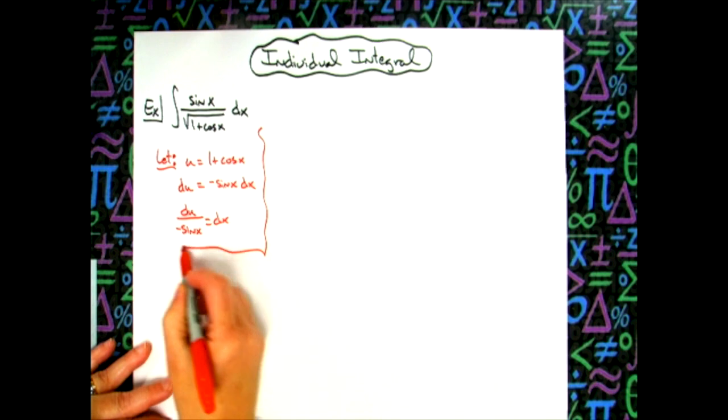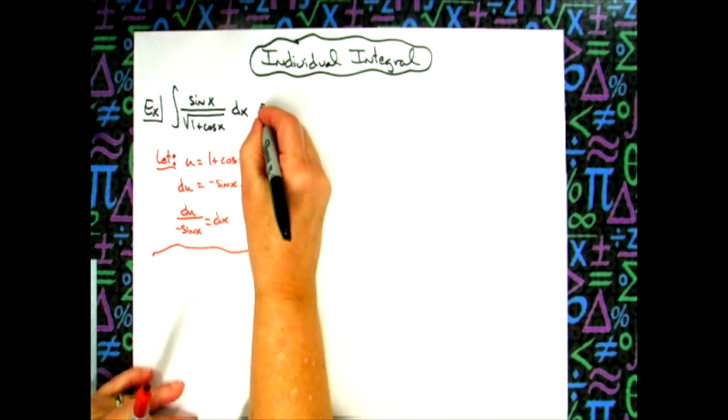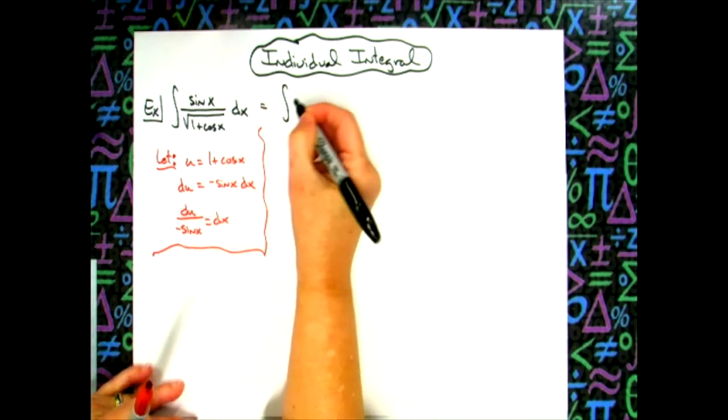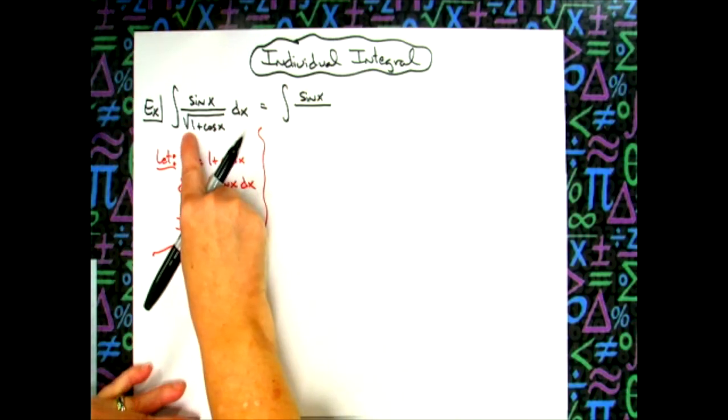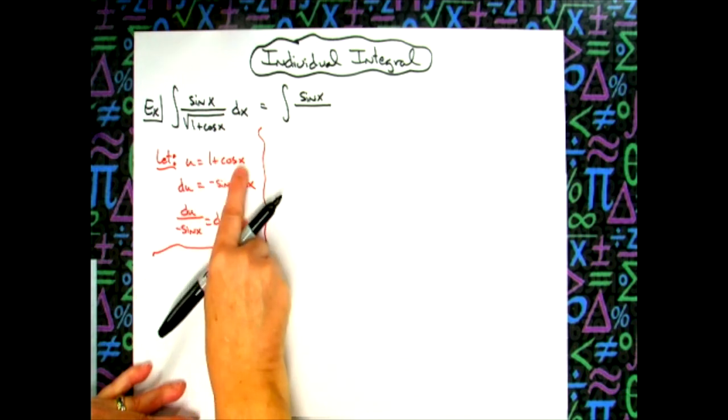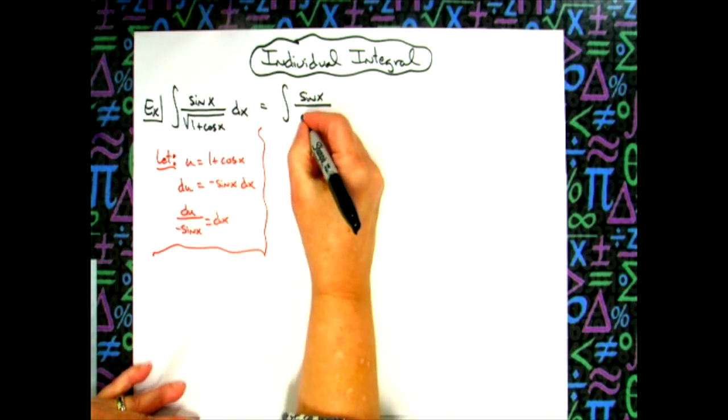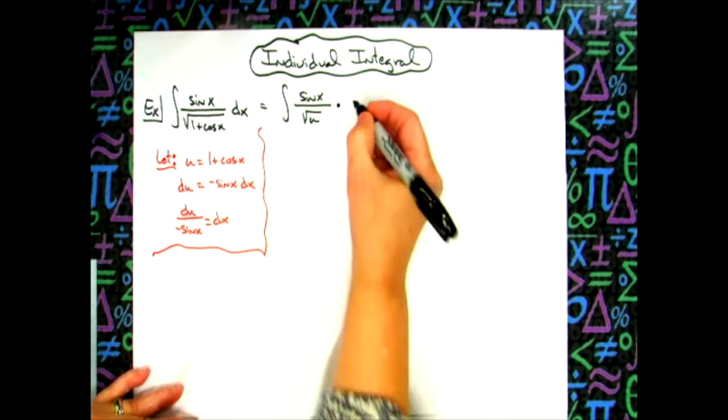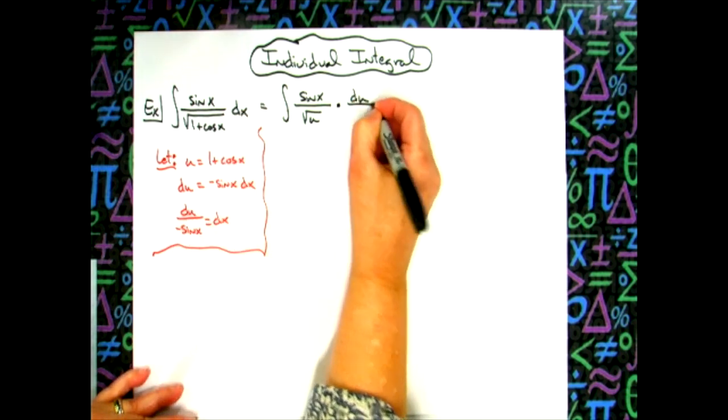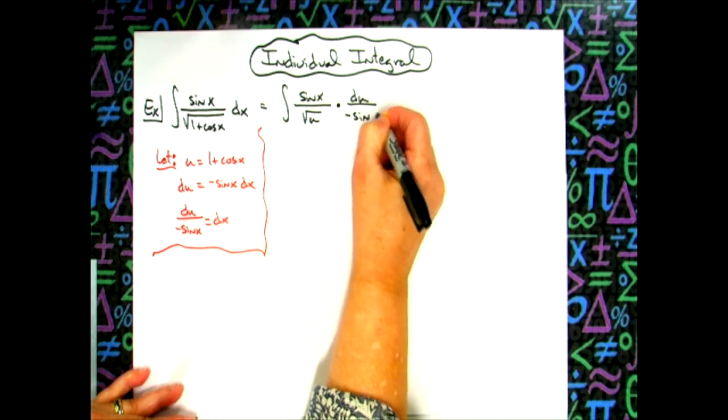At that point, we'll come back up to the original integral and do some substitutions. So we'll have the integral of sine x. We'll replace what's underneath there with our u, so square root of u, and replace dx with what it equals: du over minus sine x.